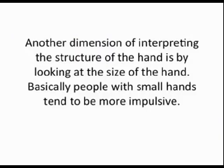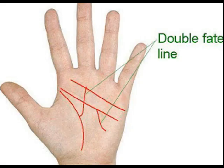Secondly, you can look at the size of the hands. This is another dimension of interpreting the structure of the hand by looking at the size of the hand. A basic note here is that people with small hands tend to be a little bit more impulsive.